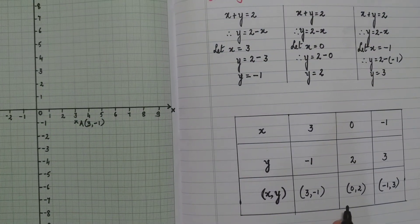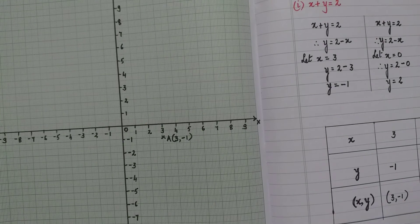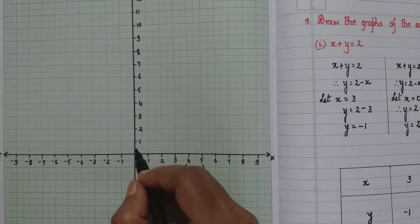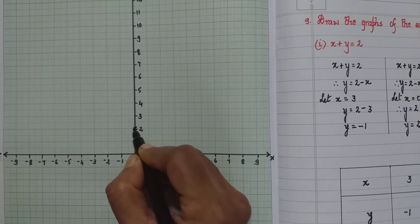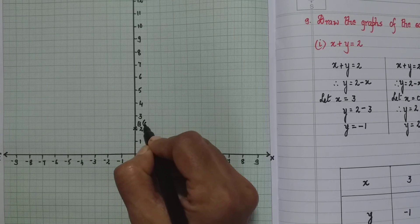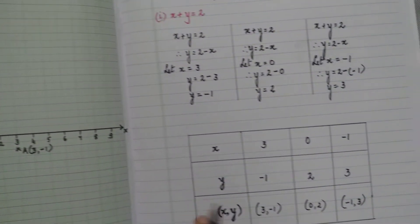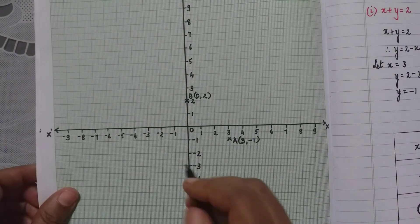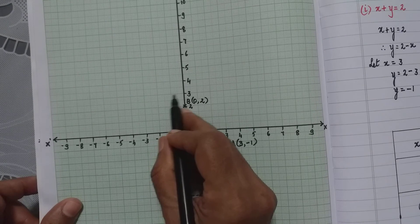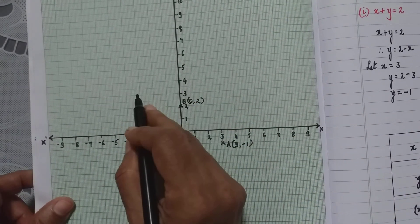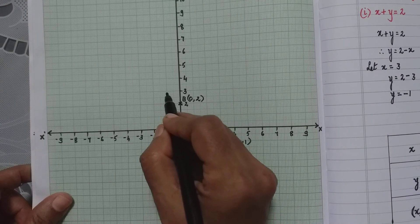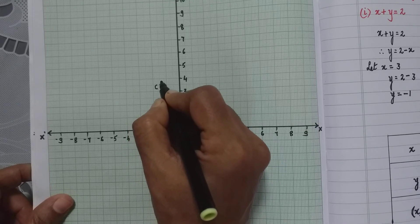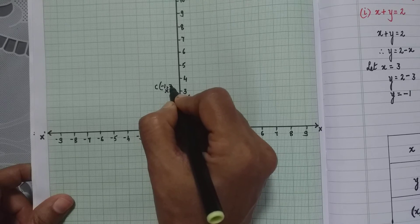The second coordinate is (0, 2). Since the x coordinate is 0, it is a point lying on the y axis. We name it B(0, 2). The third coordinate is (−1, 3): minus 1 on the x axis and 3 on the y axis, so it lies in the second quadrant. We mark it as point C(−1, 3).